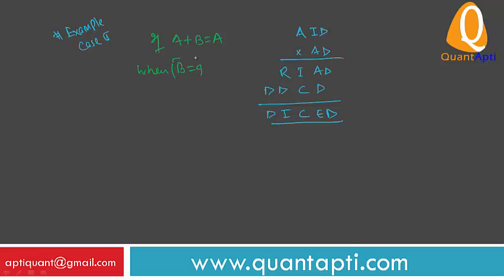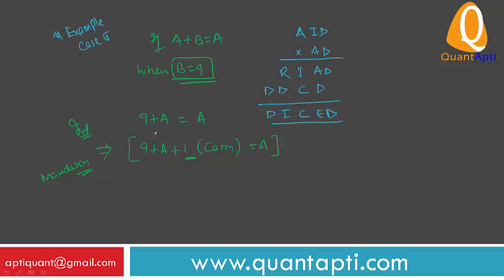For the second case, when B equals 9: if 9 plus A equals A, that is only possible if there is a carry of 1, meaning 9 plus A plus 1 equals A. This is the mandatory condition. When you have a carry of 1 from the previous addition, then you can say A plus B equals A. So remember: if there is one carry, the value of B is 9.